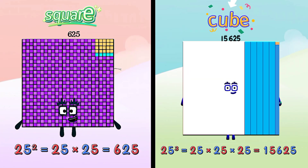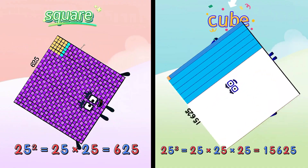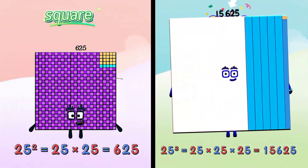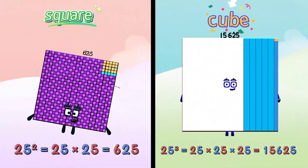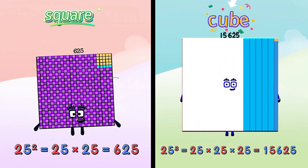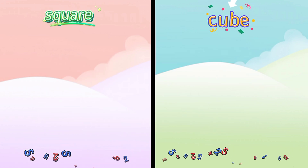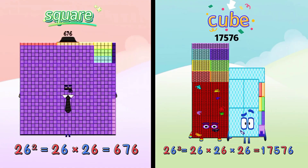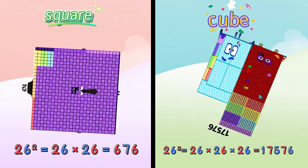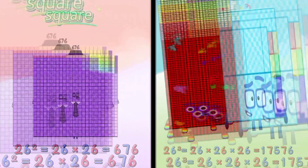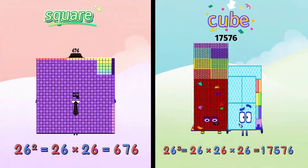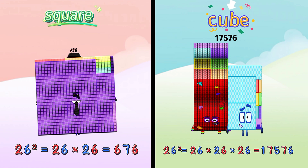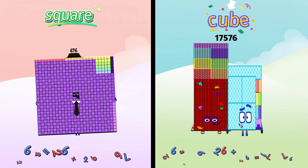Square of 25 is 625, and cube of 25 is 15625. Square of 26 is 676, and cube of 26 is 17576.